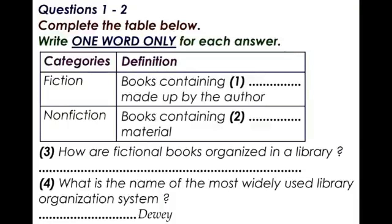Every library houses a collection of books. Many libraries also have periodicals, films and records. All the books in a library can be classified under two main categories: fiction and non-fiction.